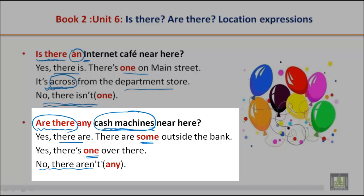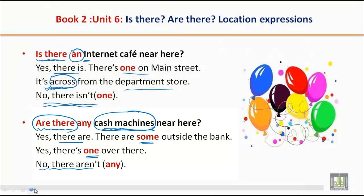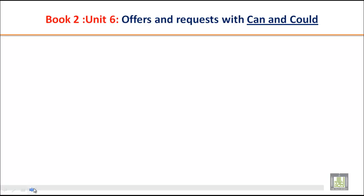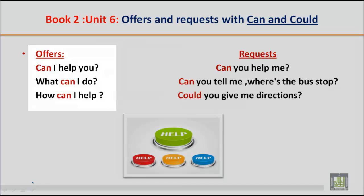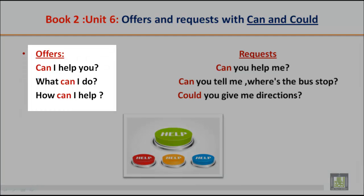Hope you have understood the usage of 'is there' and 'are there' for location expressions. Now let's do some more practice on this unit. We will practice 'can' and 'could' for offers and requests. An offer means when you want to help someone. So you can say: Can I help you? Or: What can I do for you? Or: How can I help you?